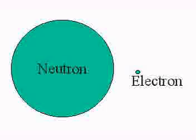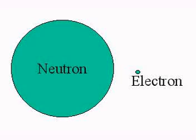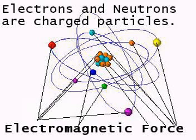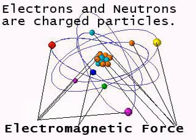Electrons are very tiny compared to protons and neutrons. The electromagnetic force is an interaction between charged particles such as the electrons and protons in this atom. The electromagnetic interaction between charged particles in the atom produces a tiny electromagnetic field.